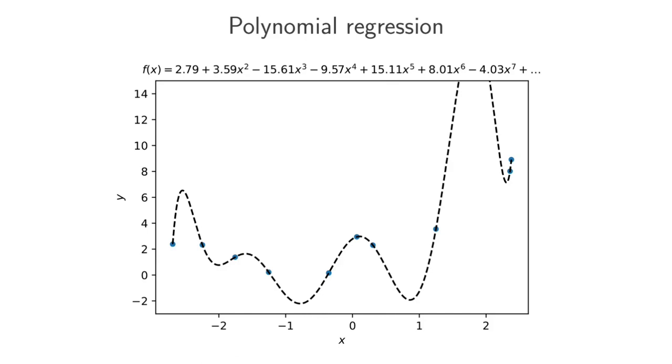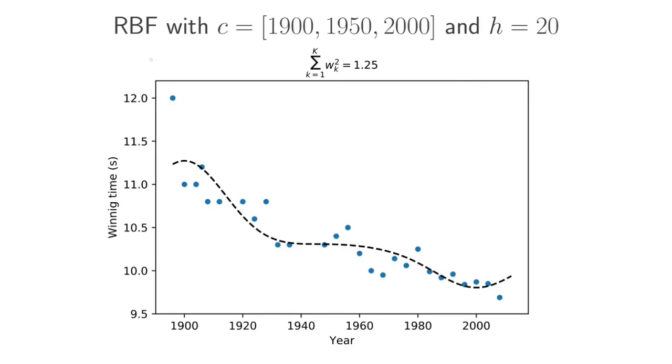Let's now look at a similar example, but instead of polynomial regression, we use radial basis functions. And in this case, we'll look at this example that I like of the men's 100 meter Olympic winning times. So here we've got the fit of a model with radial basis functions. We've got three RBFs, one at 1900, 1950, and the year 2000, and our width parameter is 20.